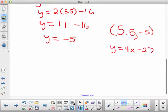So if I plug that in, it should come out to be true. So negative 5 equals 4 times 5.5 minus 27. Well, if you solve that stuff on the right, 4 times 5.5, I do believe, is 22.